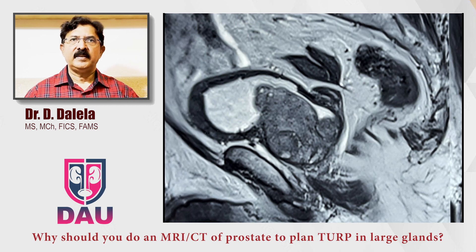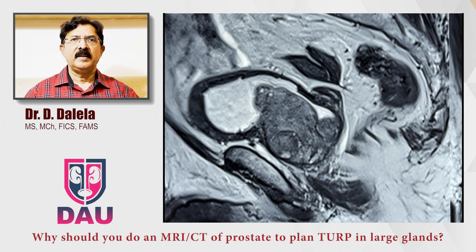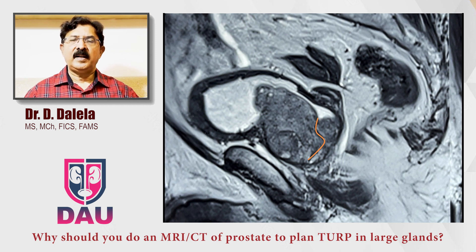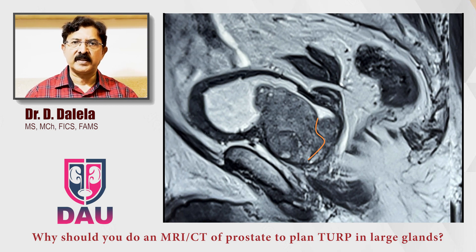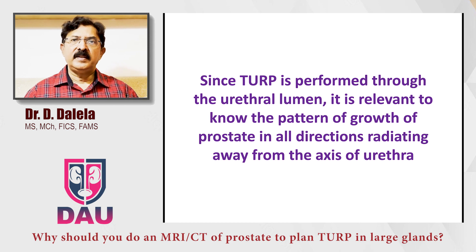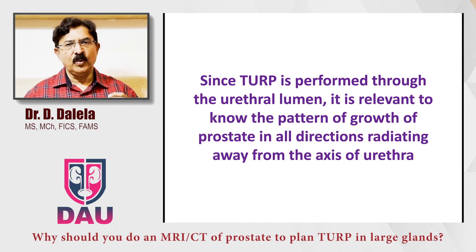In another patient, in a sagittal view, you will see the prostate has grown significantly inside the urinary bladder. When we approached the radiologist trying to find out where the urethra is, they indicated its course. Now you can see that more than 80% of the prostate volume is located anterior to the urethra, not posterior to it. So if you were to do a transurethral resection of this patient, you can anticipate the technical difficulties that you will face. Since the operation of TURP is performed through the urethral lumen, the resectionist has to know the distribution of prostatic tissue in reference to the urethra.